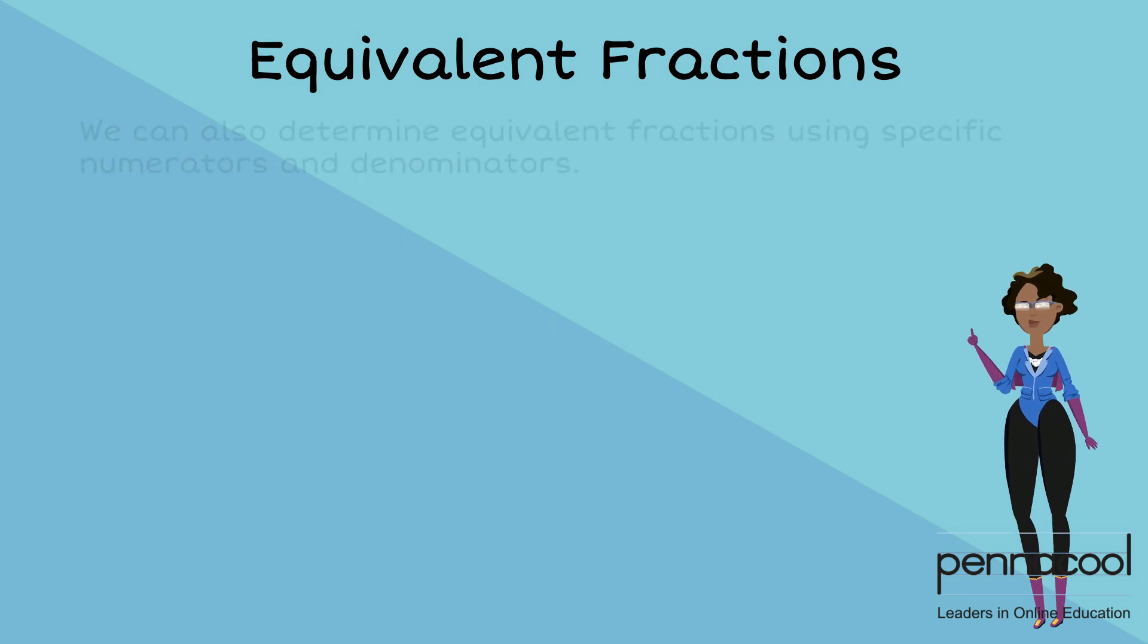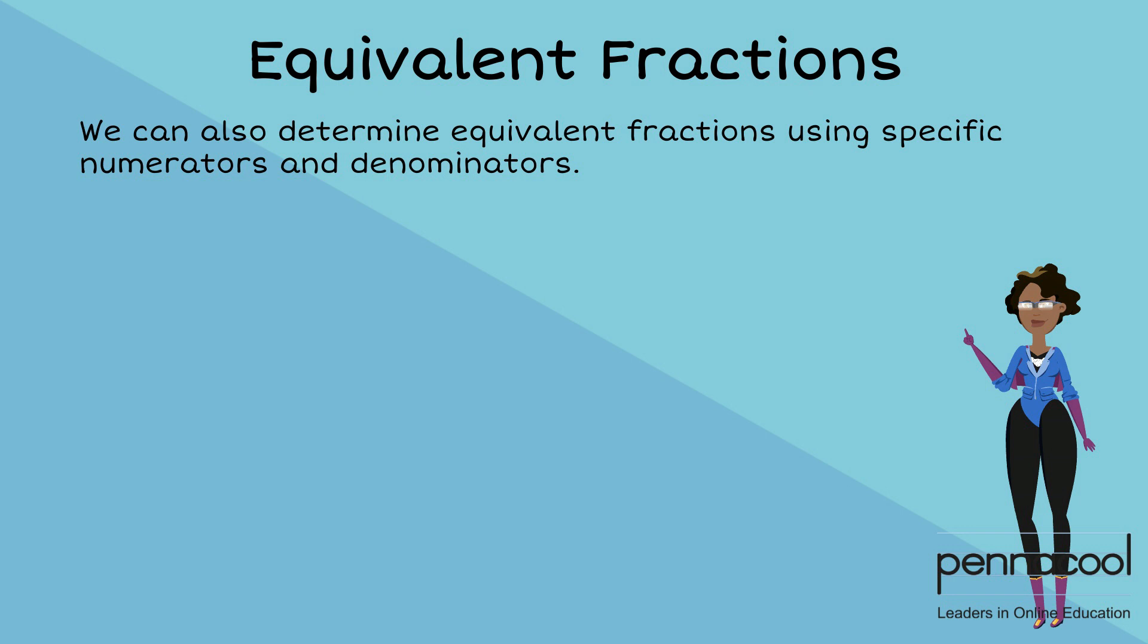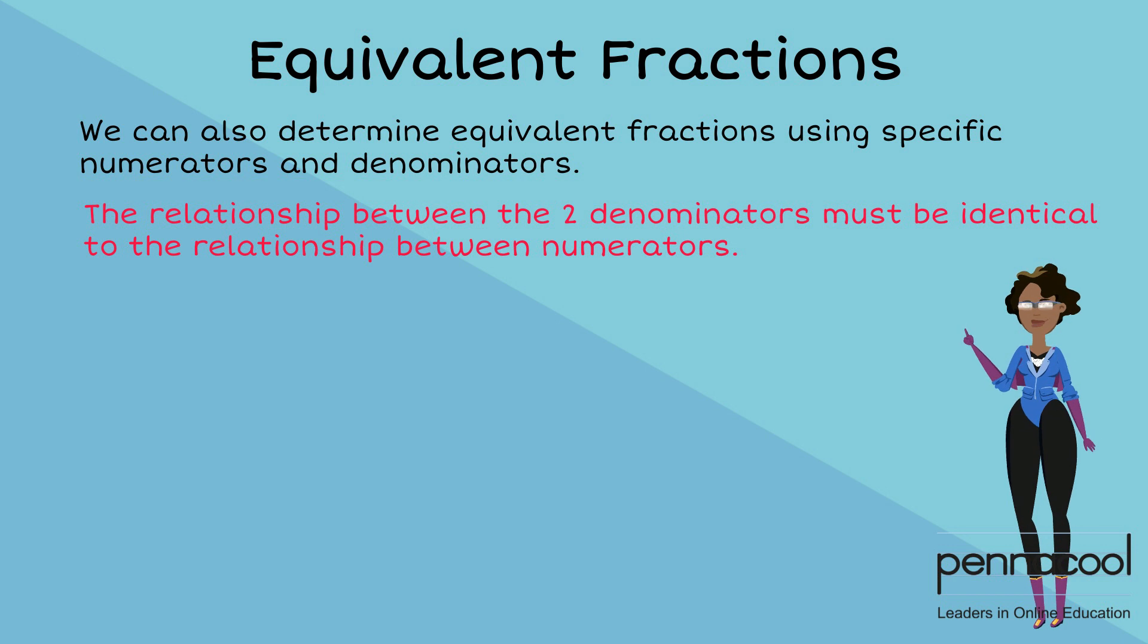We can also determine equivalent fractions using specific numerators and denominators. We know that for fractions to be equivalent, we must multiply the numerator and denominator by the same value. Therefore, the relationship between the two denominators must be identical to the relationship between the numerators.